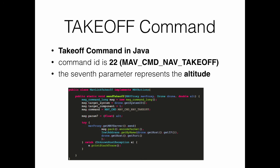Here is the takeoff command implementation in Java. The message type created is msg_command_long, which refers to a long command. The target system is assigned the system ID of the drone. The command type refers to the constant MAV_CMD_NAV_TAKEOFF, which equals 22. The 7th parameter (msg.param7) is set to the desired altitude for takeoff.